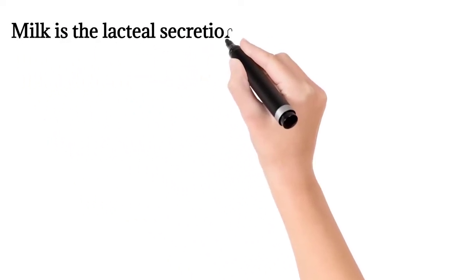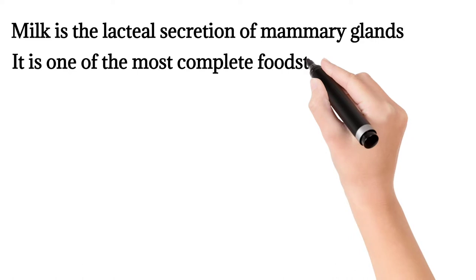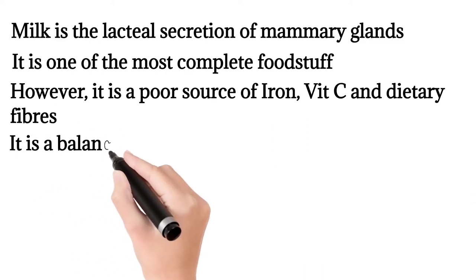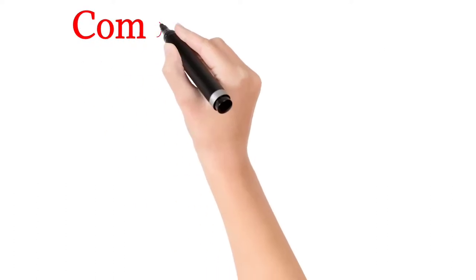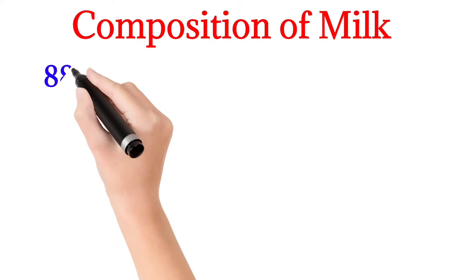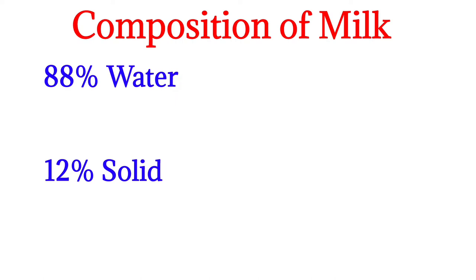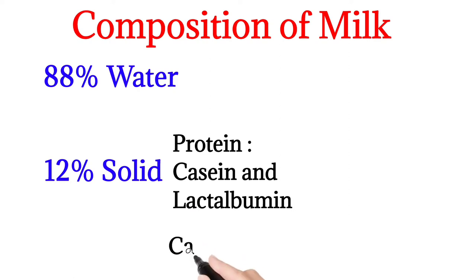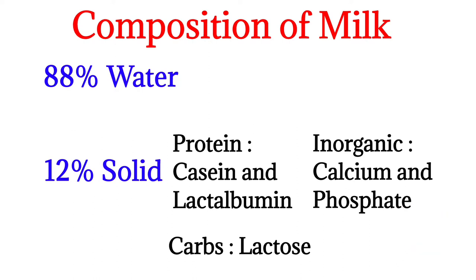Milk is the lacteal secretion of mammary glands. It is one of the most complete foodstuffs; however, it is a poor source of iron, vitamin C, and dietary fibers. It is a balanced diet for infants and children up to 5 years. The composition of milk is 88% water and 12% solid part, which includes proteins — casein and lactalbumin mainly — carbohydrates such as lactose, and inorganic substances like calcium and phosphate.